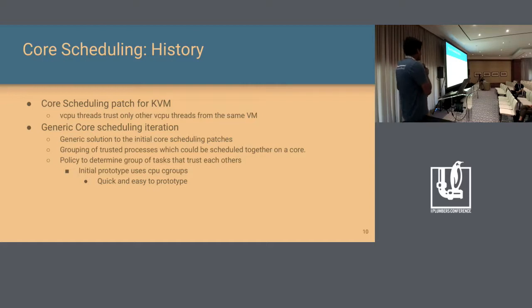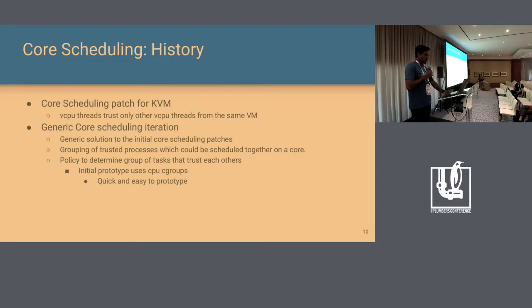For grouping, the initial prototype uses CPU cgroups because it was quick and easy to prototype.